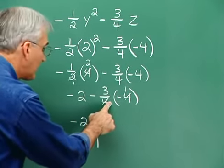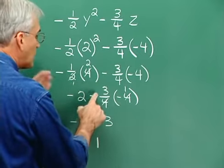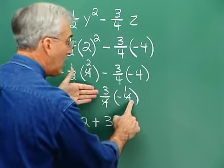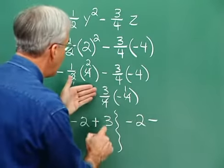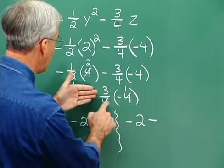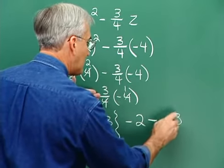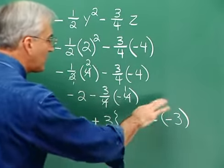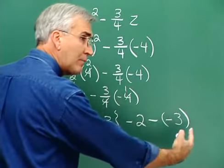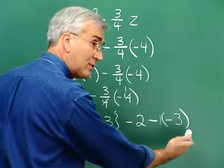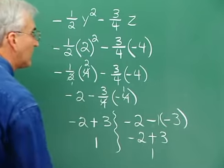There's another interpretation for this piece. The interpretation is that it is the negative of, or subtract 3 fourths times negative 4. If you interpret it that way, you would have negative 2, and then subtract this product. The 4s cancel and you have 3 times negative 1, that's negative 3. Then you'd have a double sign situation: minus negative 3, or subtract negative 3, means to add the opposite, or it means negative 1 times negative 3, which is plus 3. Either way, we get negative 2 plus 3, and 1 is the result as expected.